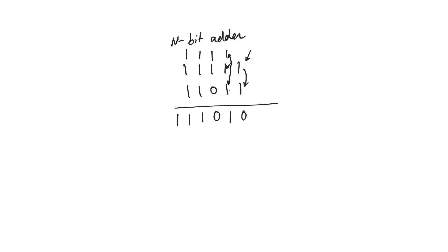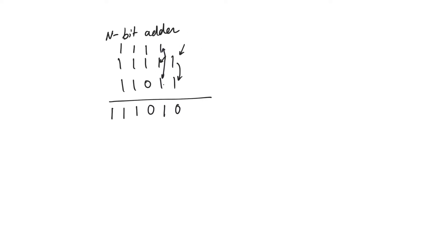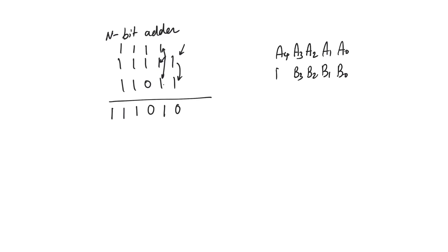So the general situation is we have an operand A, consisting of A0, A1, A2, A3, A4, up to A n-minus-1, and another operand B: B0, B1, B2, B3, and B4.